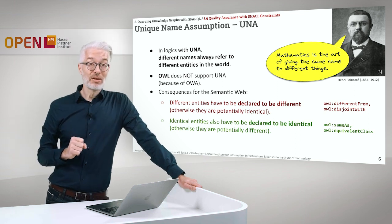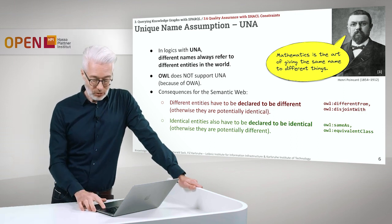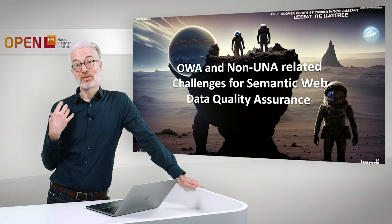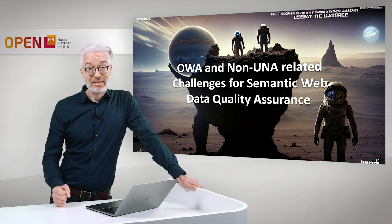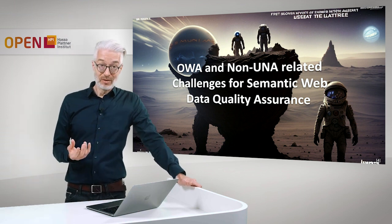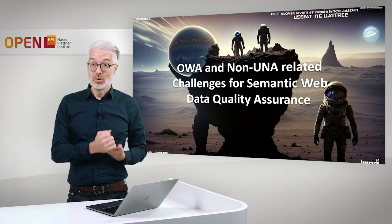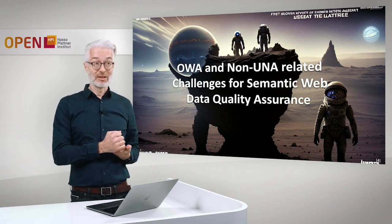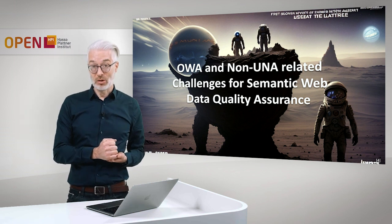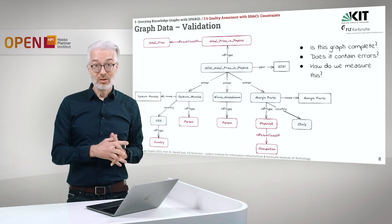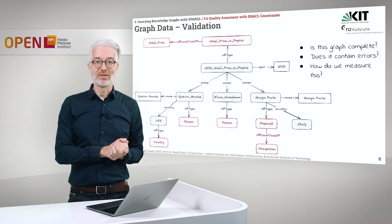Both the unique name assumption and open world assumption are responsible for making quality assurance quite a challenge. We have to find a way — or add something on top — that enables us to ensure quality of our data sources: that they are complete according to our definitions, that things are unique, and that there are no errors. The way to do that is called SHACL, and I want to show you how we do graph validation based on SHACL.